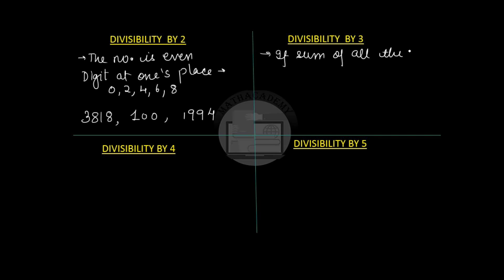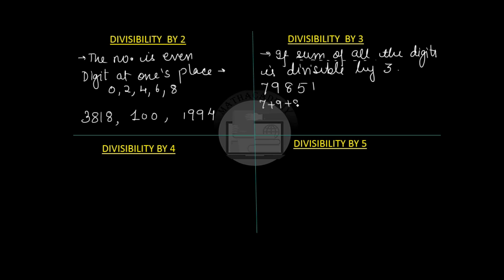Divisibility by 3 says that a number is divisible by 3 if the sum of all the digits in the number is divisible by 3. For example, take the number 79851. The sum of digits: 7 plus 9 plus 8 plus 5 plus 1 equals 30. Since 30 is divisible by 3 — 30 divided by 3 equals 10 — we can say that 79851 is divisible by 3.